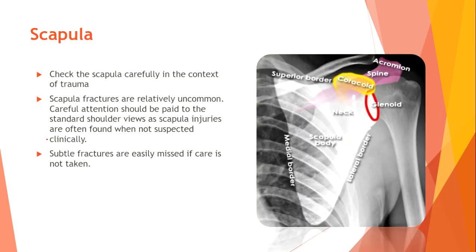Scapula. Check the scapula carefully in the context of trauma. Scapular fractures are relatively uncommon, but careful attention should be paid as scapular injuries are often found when not clinically suspected. Subtle fractures are easily missed. Key anatomical landmarks include: superior border, medial border, lateral border, body, neck, glenoid fossa, coracoid process, and acromion spine.